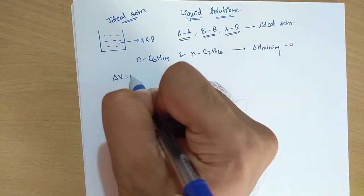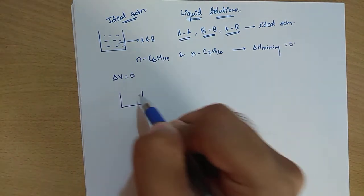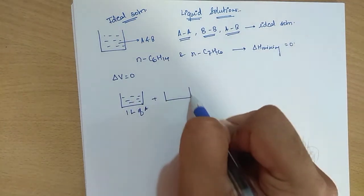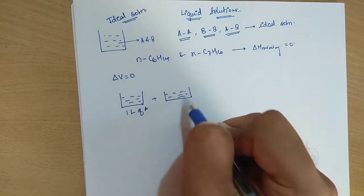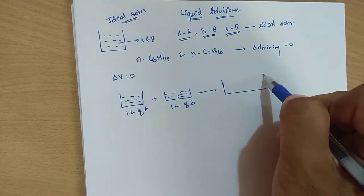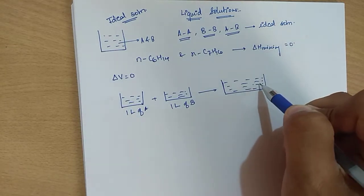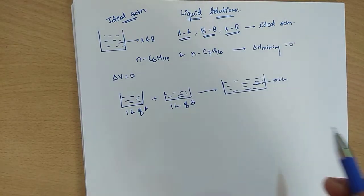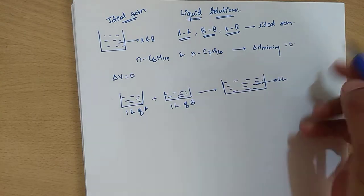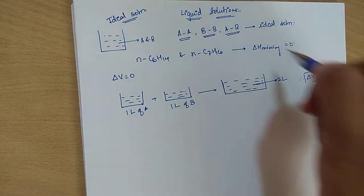The next important property is that the change in volume is also zero. If you have one liter of A and one liter of B, and you mix them to form an ideal solution, the volume of the mixture will be equal to two liters. So total volume after mixing equals total volume before mixing — delta V of mixing is zero.